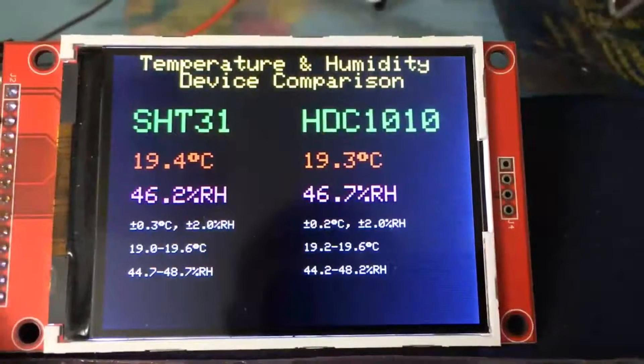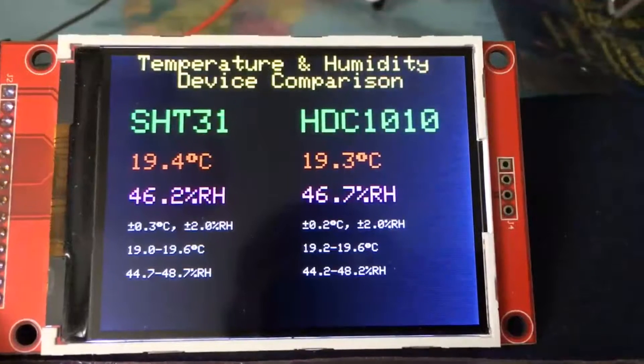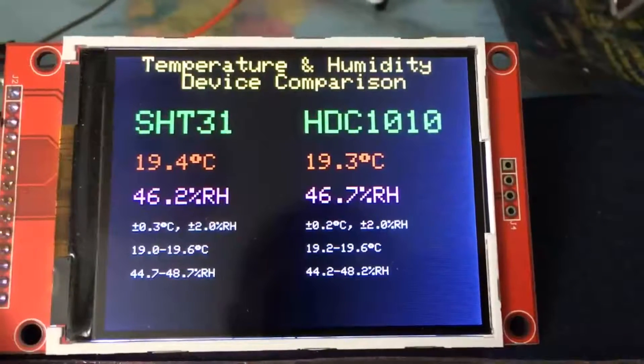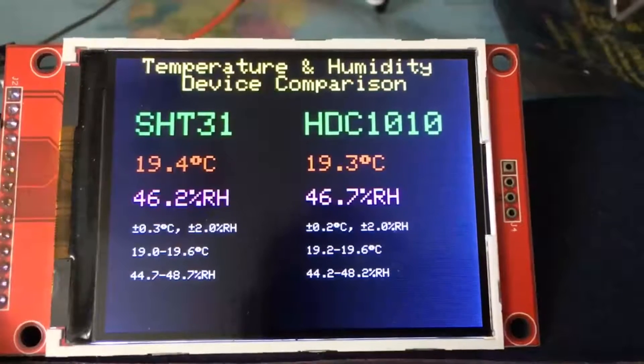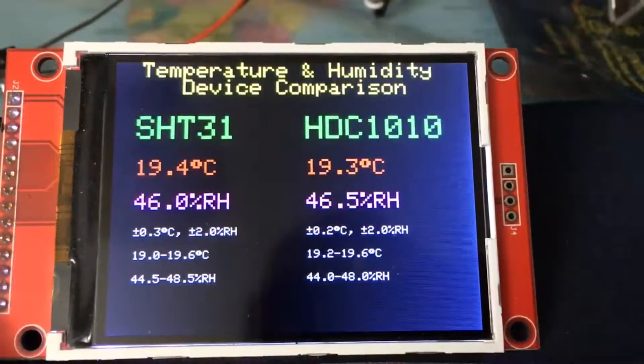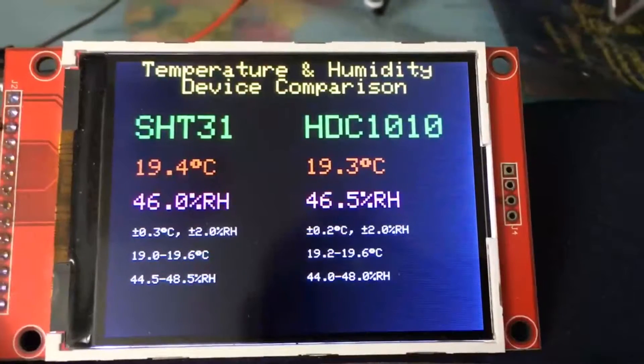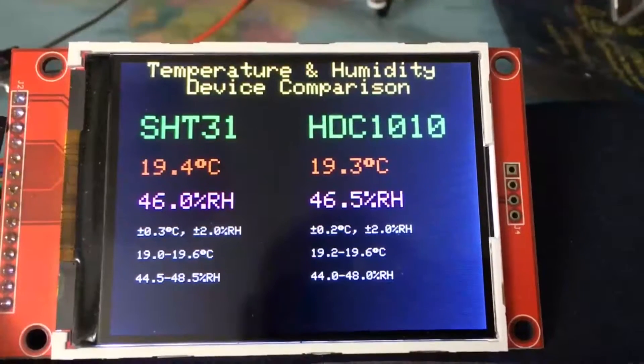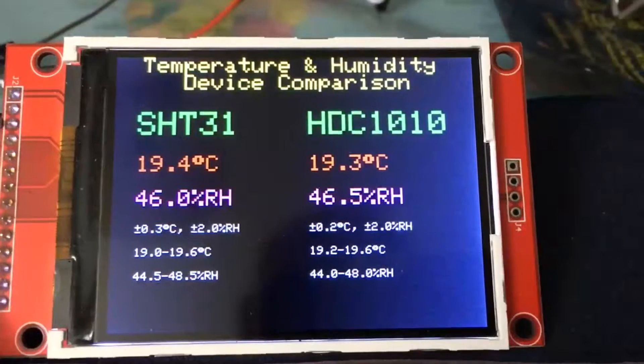19.2 to 19.6, 44.2 to 42.8 are tolerance results referenced to the SHT31. I don't know which one's correct but every time I run this test the temperature and humidity sit within those tolerance bands.